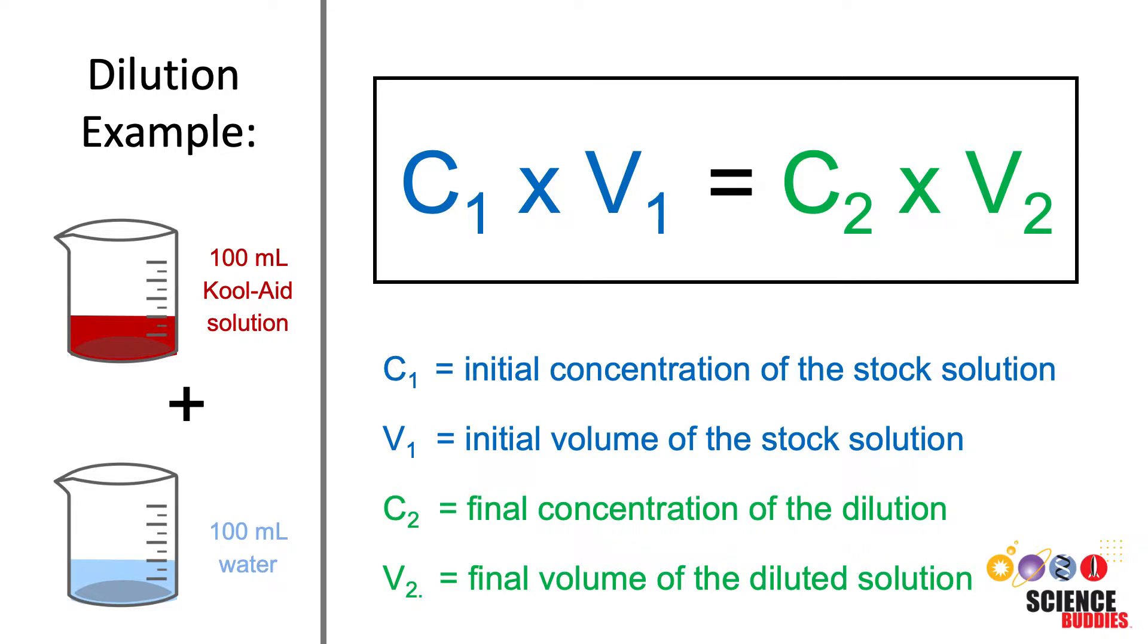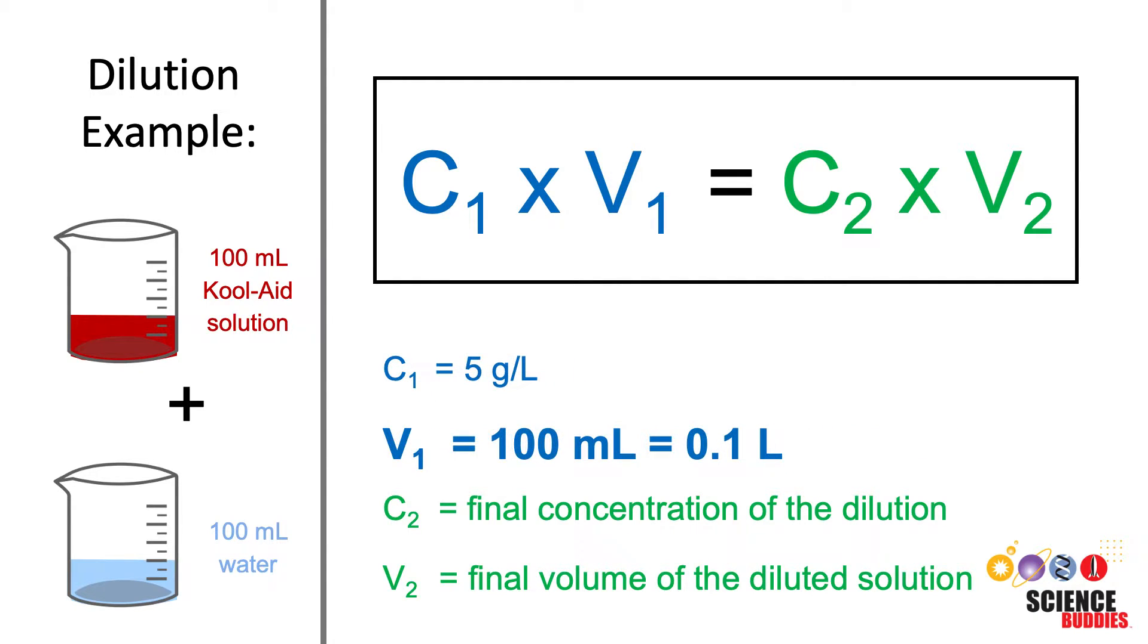Let's use this equation to calculate the Kool-Aid concentration in our dilution example. The initial concentration of the Kool-Aid in the stock solution, C1, is 5 grams per liter. The initial volume of the stock solution, V1, used to make the dilution is 100 ml or 0.1 liters.